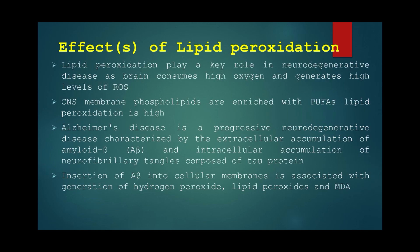Lipid peroxidation is also associated with neurodegenerative diseases. The brain consumes high amounts of oxygen and generates high levels of reactive oxygen species during ATP synthesis in the mitochondria. Since central nervous system membrane phospholipids are enriched with PUFA, lipid peroxidation is very high. An example of such a neurodegenerative disease is Alzheimer's, which is a progressive neurodegenerative condition.